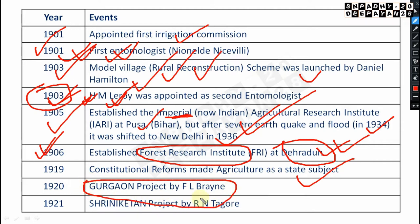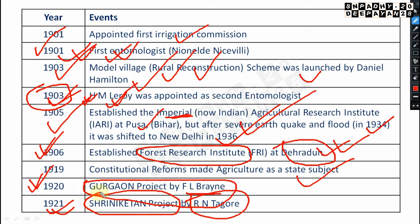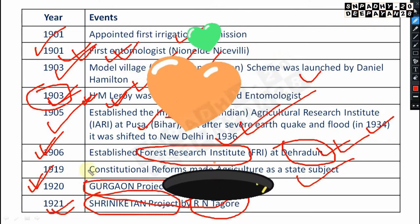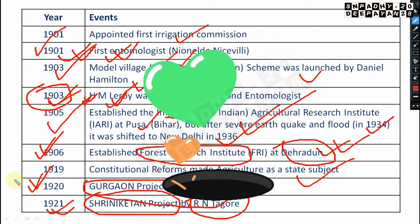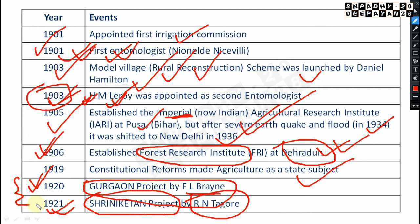The Gurgaon Project was by F.L. Brayne in 1920 — very important. In 1921, the Shantiniketan Project was by Rabindranath Tagore — also very very important. Please remember both: Gurgaon Project by F.L. Brayne in 1920, and Shantiniketan Project by Rabindranath Tagore in 1921.